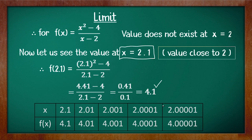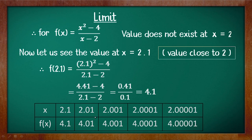Here are a few values: when x = 2.1, f(x) = 4.1; when x = 2.01, f(x) = 4.01; when x = 2.001, f(x) = 4.001; and so on. We are taking values very close to 2 from the right side. You can verify these values with a calculator.